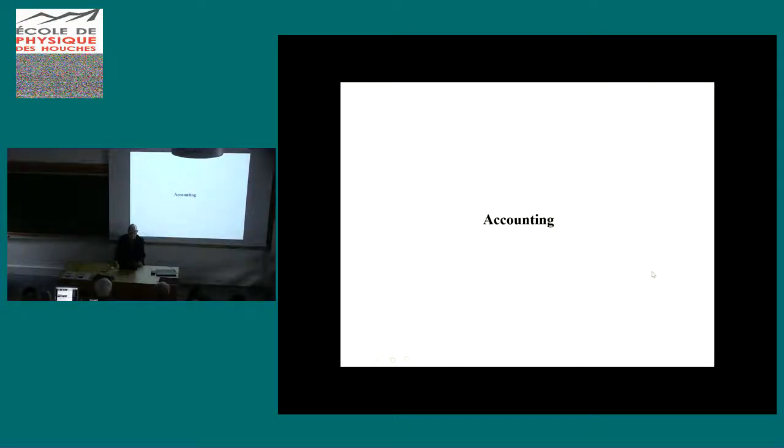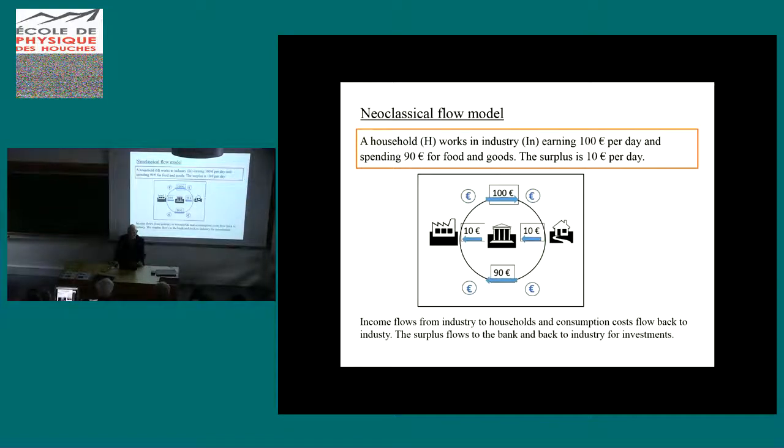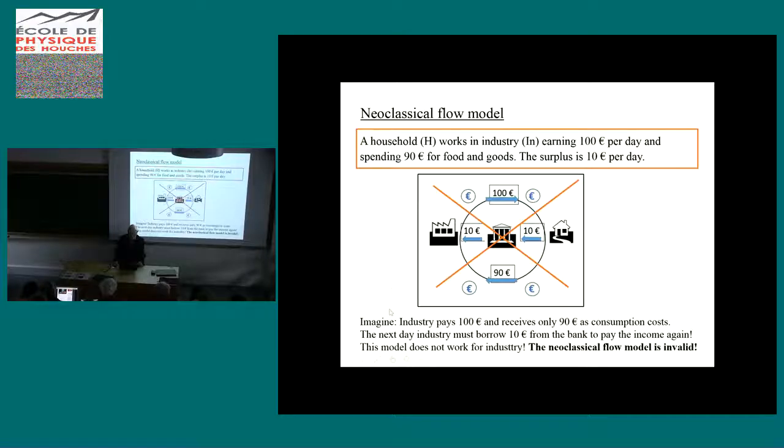Now I come to accounting. I will first present the neoclassical flow model with this example: A household works in industry earning 100 euros per day, spending 90 for food and goods, and the surplus is 10 euros per day. The neoclassical flow model tells us income flows from industry to households, and consumption costs flow back to industry. The surplus goes to the bank and back to industry for investment. But this model is wrong.